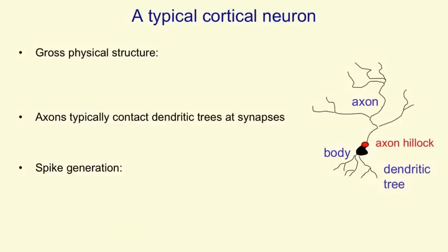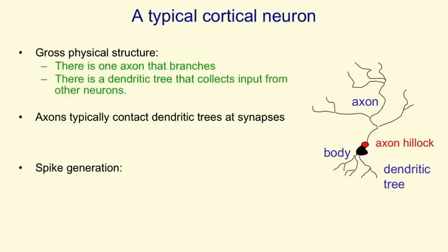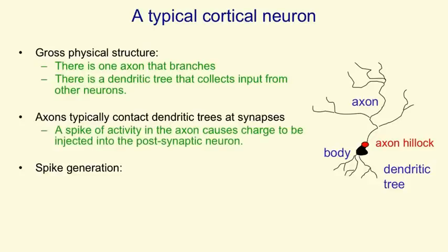I'm going to talk more in this video about how the brain actually works. A typical cortical neuron has a gross physical structure that consists of a cell body and an axon where it sends messages to other neurons, and a dendritic tree where it receives messages from other neurons. Where an axon from one neuron contacts a dendritic tree of another neuron, there's a structure called a synapse, and a spike of activity travelling along the axon causes charge to be injected into the postsynaptic neuron at a synapse.